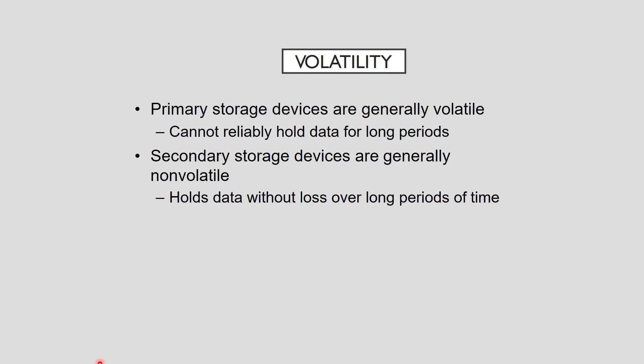Regarding volatility: a storage device or medium is non-volatile if it holds data without loss over long periods, and volatile if it cannot hold data reliably for a long period. Primary storage devices are generally volatile and secondary storage devices are non-volatile. Volatility is actually a matter of degree and conditions. For example, RAM is non-volatile as long as external power is supplied continuously, but it is generally considered a volatile storage device because continuous power cannot be guaranteed under normal operating conditions, such as during a system restart after installing an OS update.